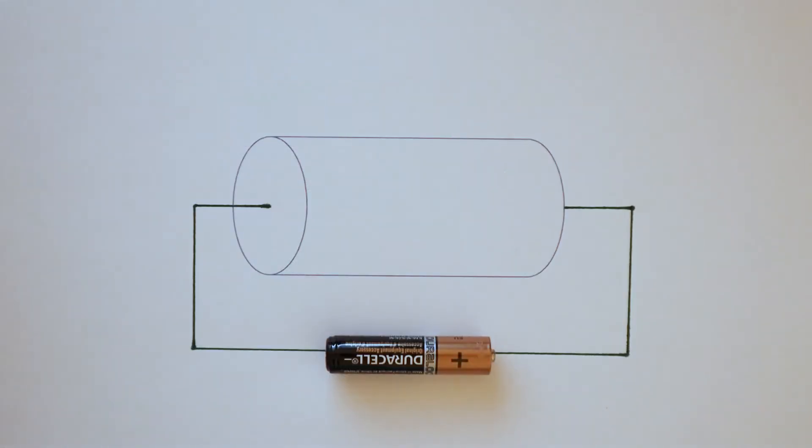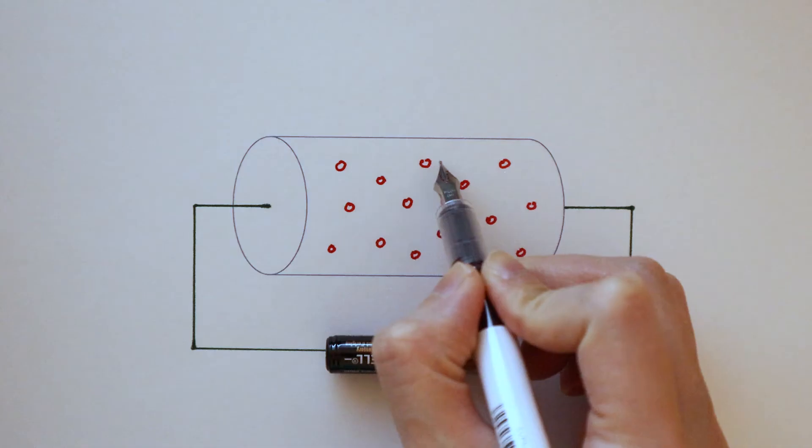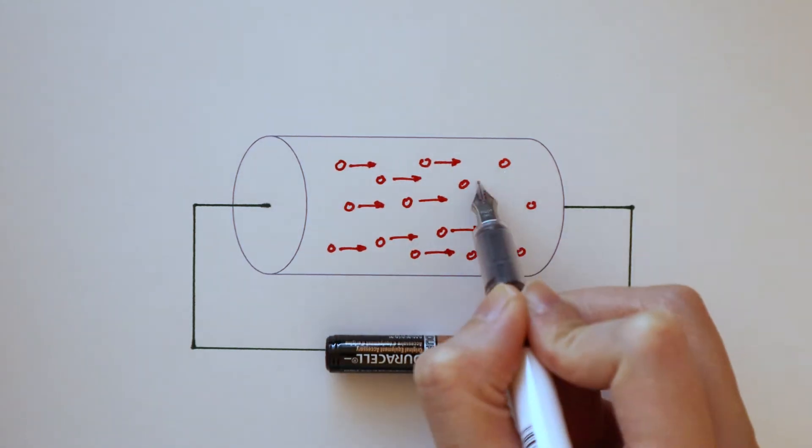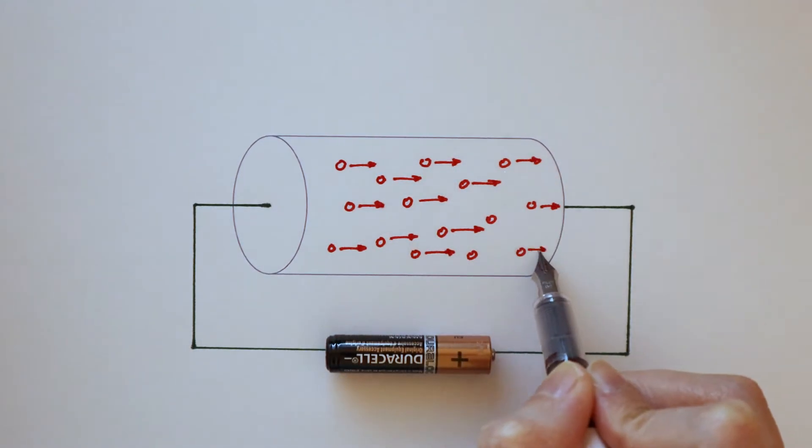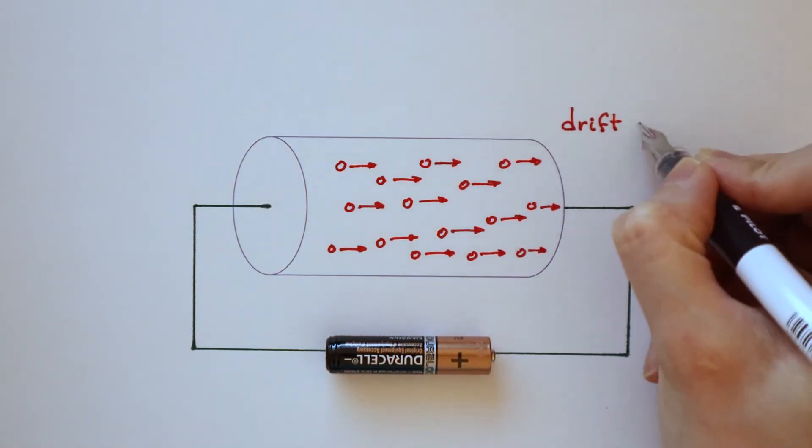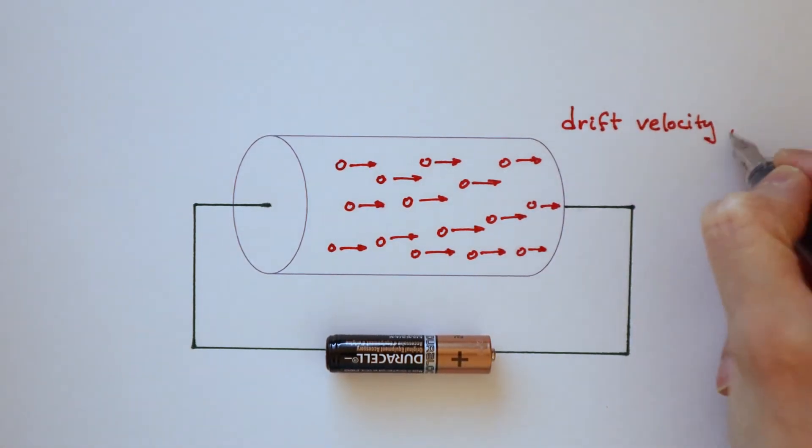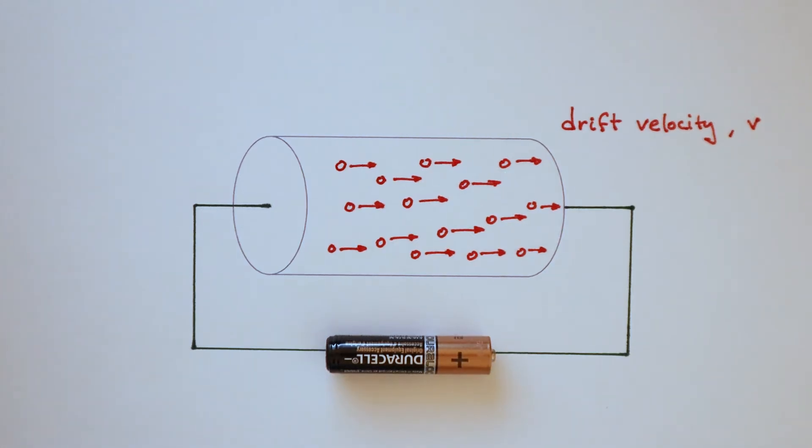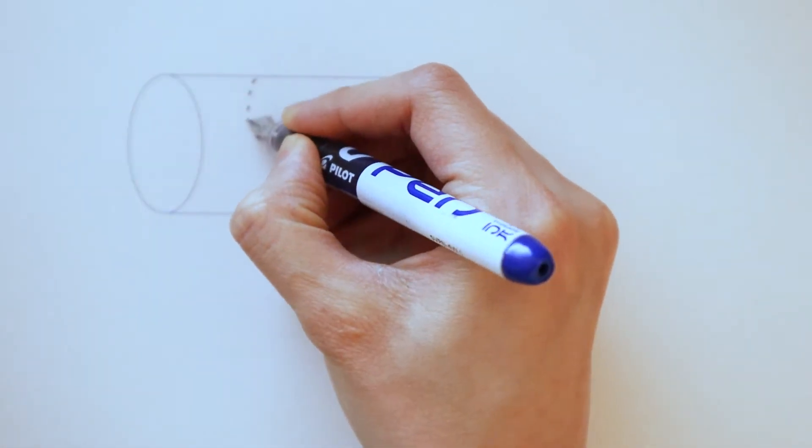But if we now apply a potential difference across the conductor, there will be an overall average velocity in one direction. This average velocity of the electrons is known as the drift velocity. To derive the expression for drift velocity, let's consider just one section of the conductor.